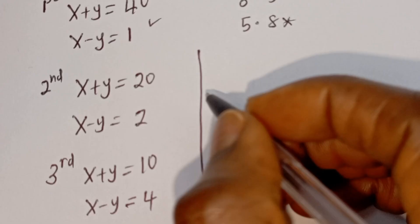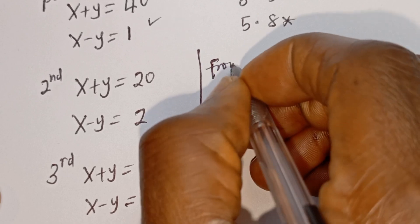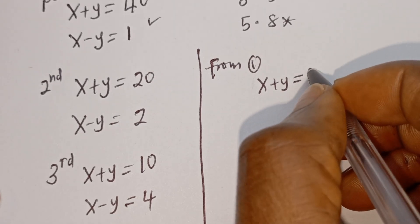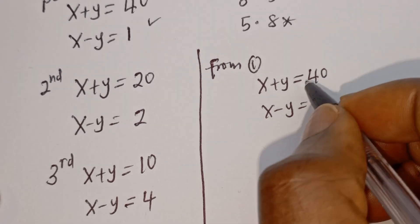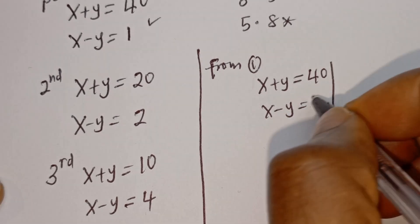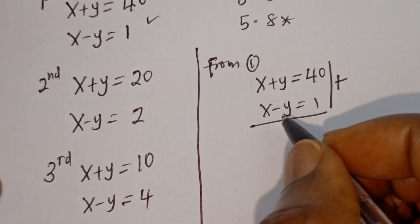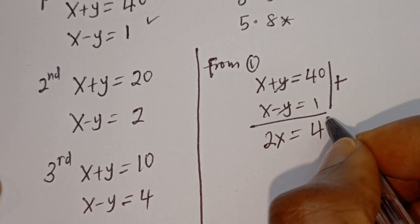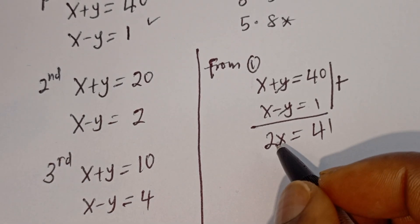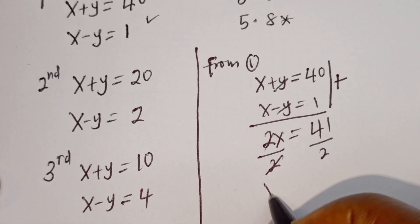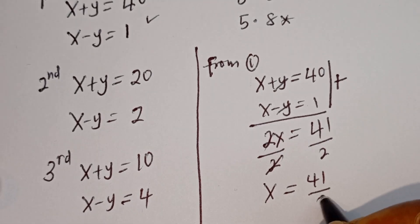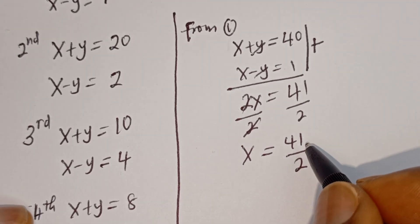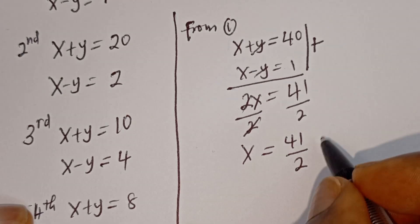Consider the first case: x plus y equals 40, and x minus y equals 1. This is a simultaneous equation. Using the elimination method by adding the two equations together, the y terms cancel. We get 2x equals 41, so x equals 41 divided by 2. But 41 divided by 2 is not a natural number. Since the question requires x and y to be natural numbers, this case is rejected.